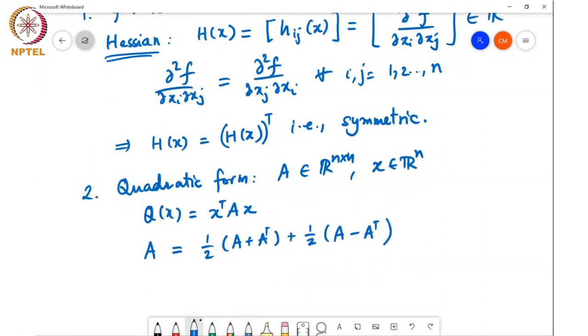If I substitute this into Q(x), that means Q(x) equals half x^T(A + A^T)x plus half x^T(A - A^T)x.